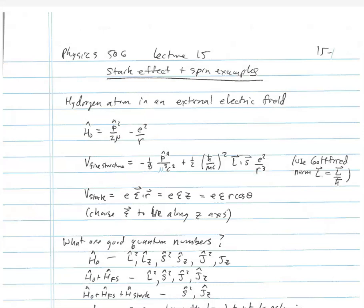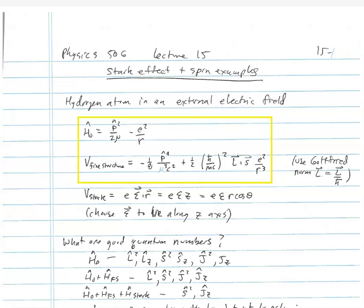So what are the good quantum numbers? This is always where you start when thinking about perturbation theory. For the initial Hamiltonian, l², lz, s², sz, j², and jz all commute with the Hamiltonian. When we add the fine structure, it's the j², jz basis that is valid, because those quantum numbers are good. So l², s², j², and jz commute with V_fine_structure, meaning those are good quantum numbers for H0 plus V_fine_structure.